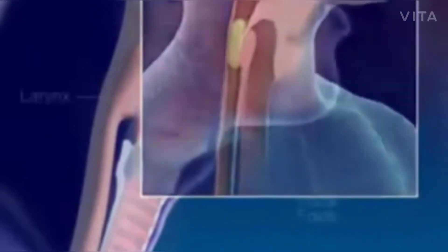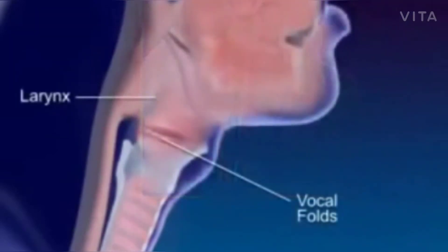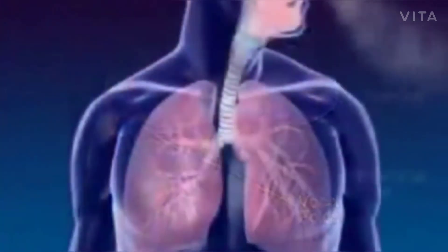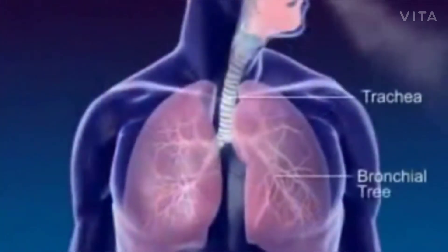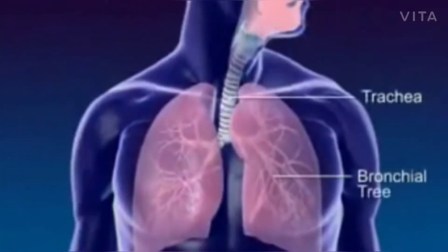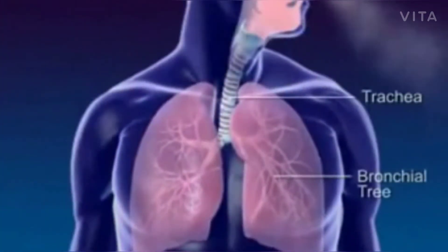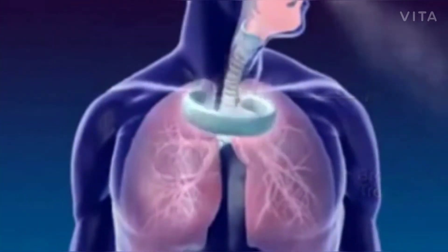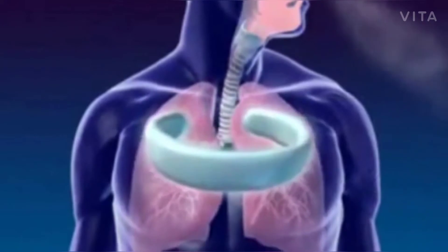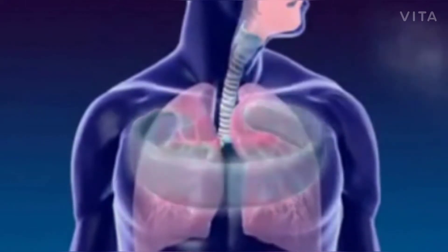The larynx, or voice box, contains the vocal folds. The trachea, or windpipe, connects the larynx to the bronchial tree. The cartilage rings of the trachea prevent the trachea from collapsing.